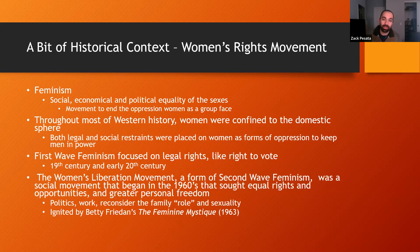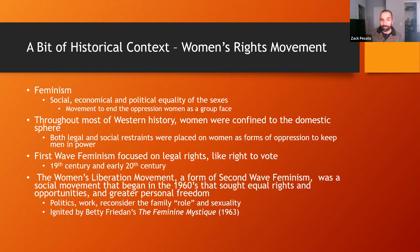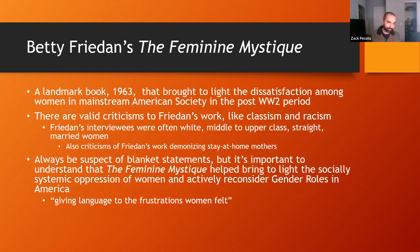The women's liberation movement — a form of second wave feminism — was a social movement that began in the 1960s, seeking equal rights, opportunities, and greater personal freedom. It focused more on social constructs, politics, work, and reconsidering the family role and sexuality. It was ignited by Betty Friedan's 'The Feminine Mystique,' a book published in 1963. I'm going to offer a little bit of information about that book and its impact.